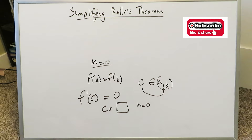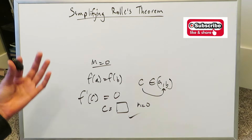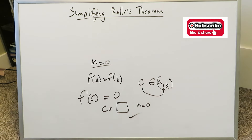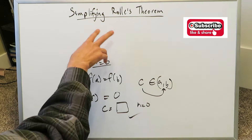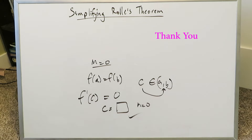Remember: for Rolle's Theorem, you find a numerical value c within your interval where the slope equals 0, giving a horizontal tangent line. You must show the function is continuous and differentiable, and that f(a) = f(b). This topic falls under the general subject of mean value theorems and connects to other important mean value theorems. Thank you for watching, have a nice day.